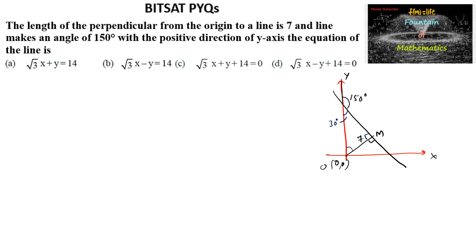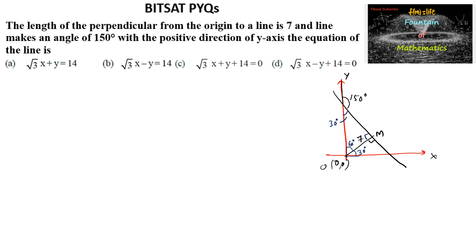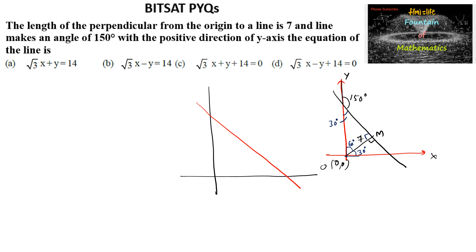With 60 degrees here and 90 degrees at the axis, the complementary angle is 30 degrees on the other side. So we can conclude that the perpendicular makes an angle of 30 degrees with the X-axis, and the perpendicular distance is 7 units.